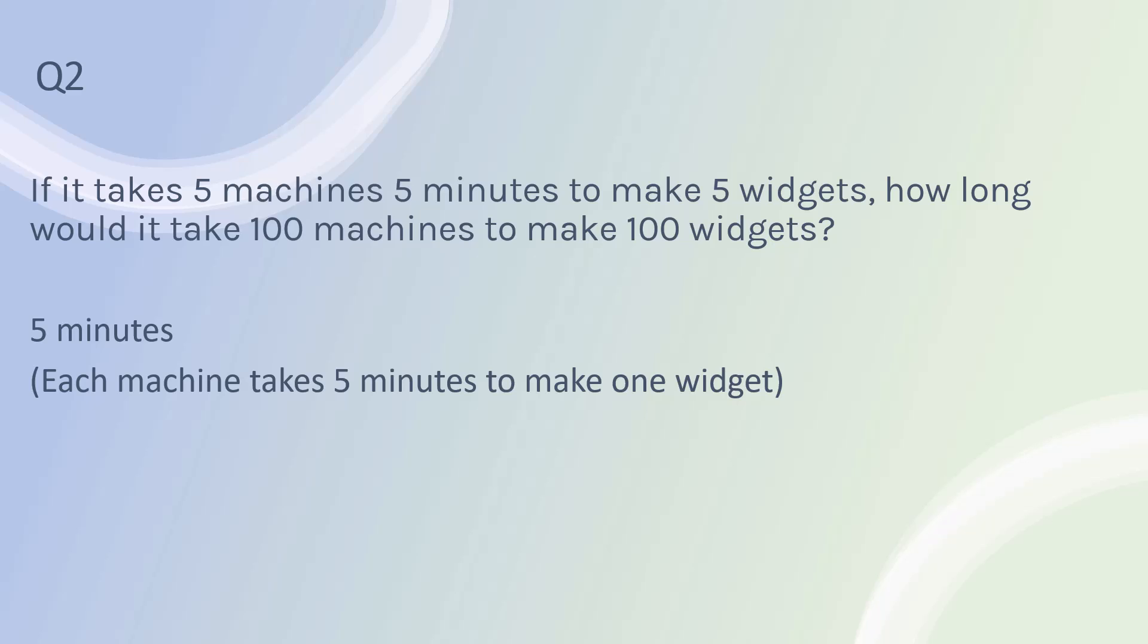So if we had five of them, each takes five minutes, but the five machines produce the five widgets. If we have a hundred machines and we are trying to make a hundred widgets, well, we know that that is still five minutes per machine, and we have one machine for each of the required widgets.